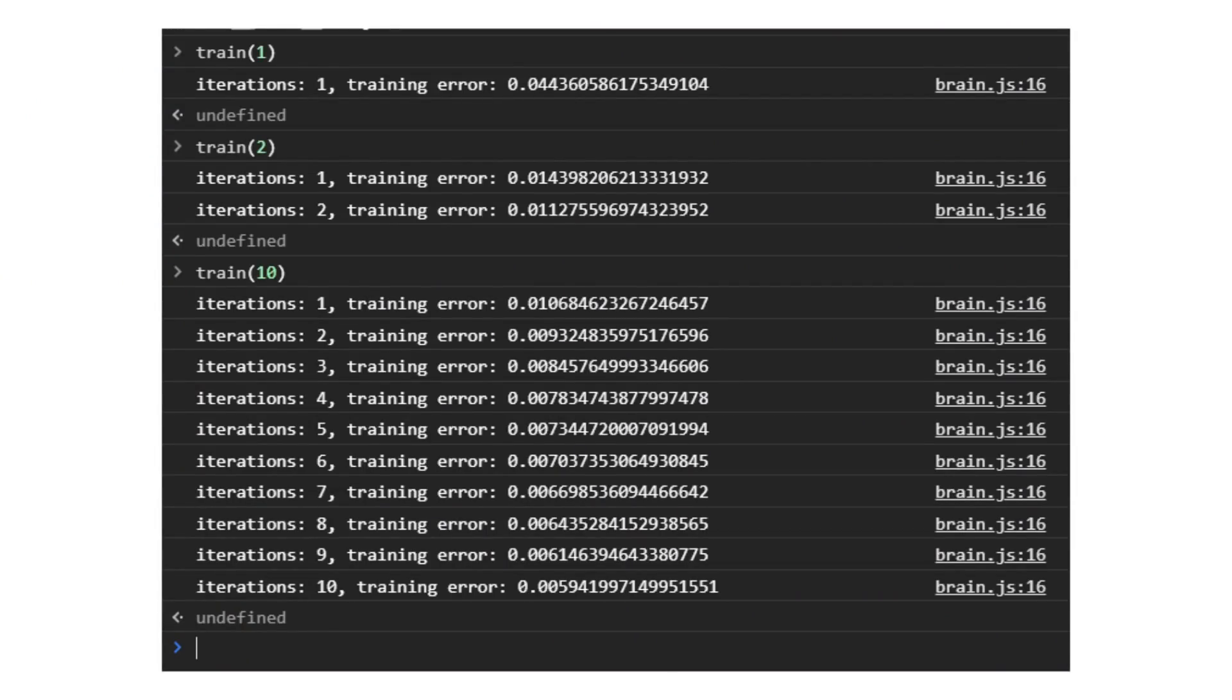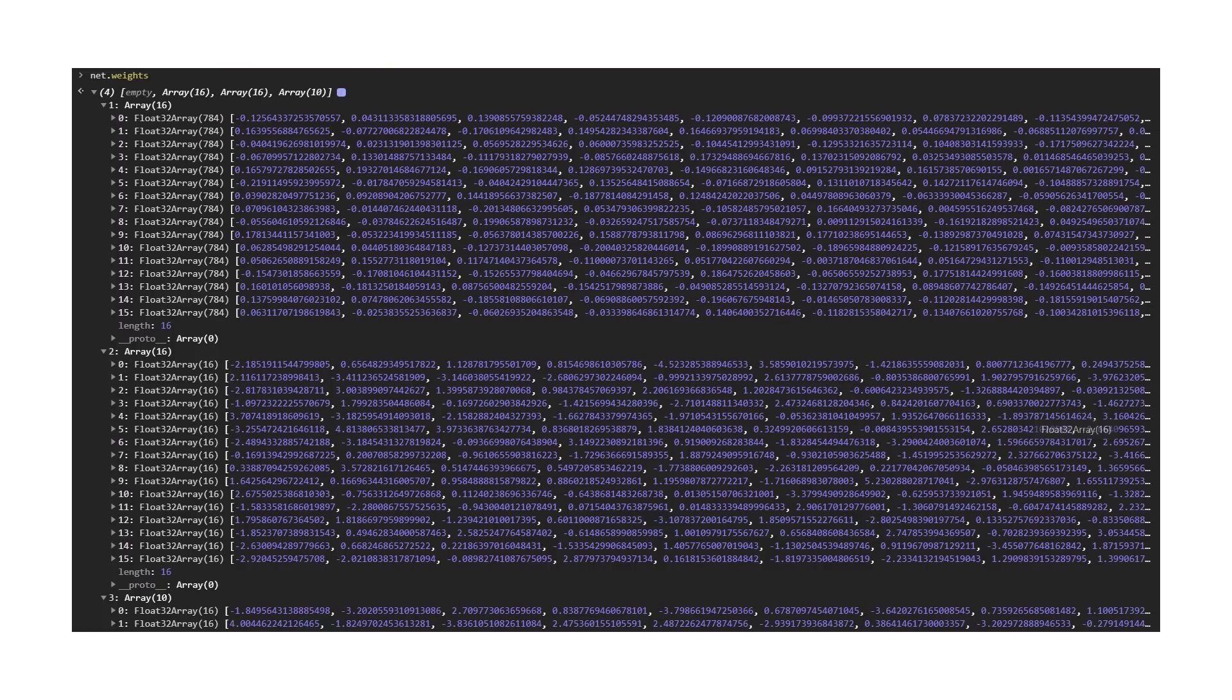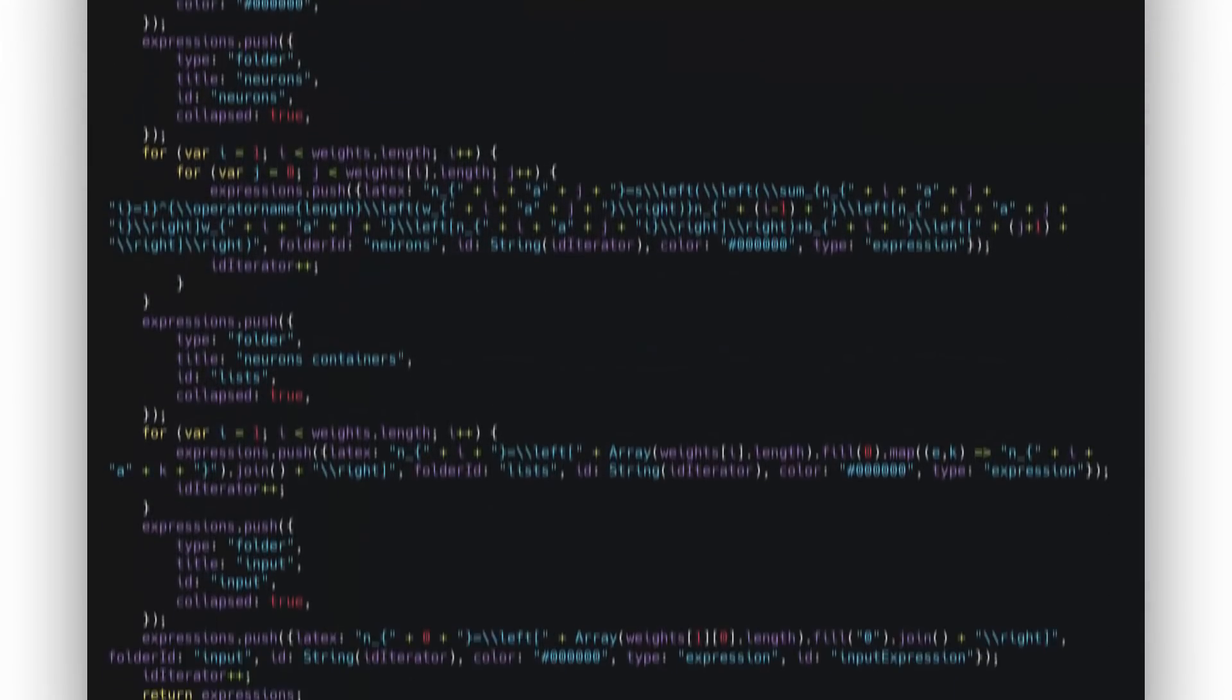A bit of training later, and now we have a network that doesn't completely suck at classifying numbers. Unlike with the smaller XOR network, this network is a little too big for me to just copy-paste values, so instead I wrote a function to convert a set of weights and biases to a list of Desmos expressions.